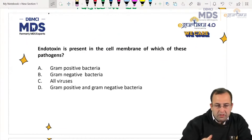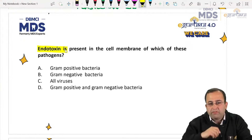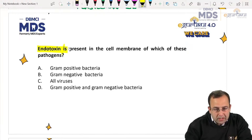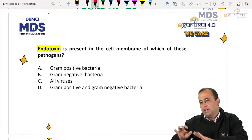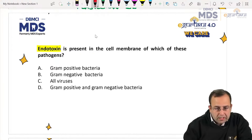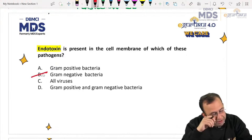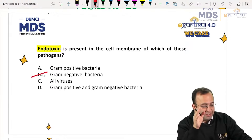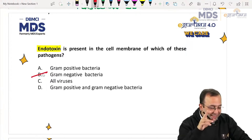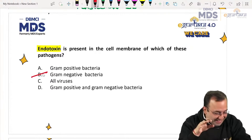Next question: endotoxin is present in the cell membrane of which of these pathogens? A question is repeated only when majority of students go wrong in it. Endotoxins are secreted by gram negative bacteria.